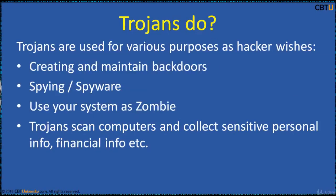Trojans are used for various purposes as the hacker wishes, like creating and maintaining backdoors. Trojans install backdoors to maintain access to the compromised system and install other malware. Spying — Trojans act like spyware, watching the victim's activity and grabbing sensitive personal information back to their master. Hackers also use the victim's system as a zombie to carry out further attacks. Trojans cover their tracks to avoid detection. Some governments also use software — govware or a Trojan — to intercept communications from a target computer in the national interest.